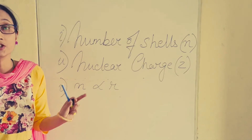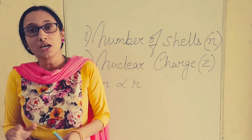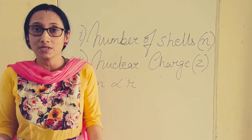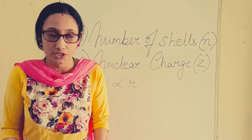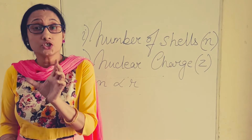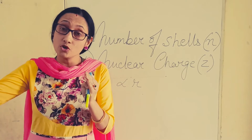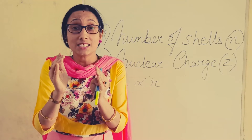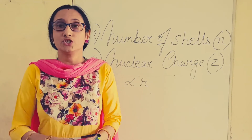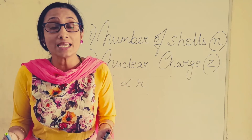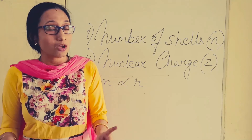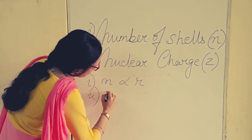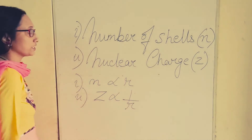The second factor is nuclear charge, designated as Z. Nuclear charge is the total positive charge present within the nucleus of an atom, represented by the number of protons. When nuclear charge increases, the attraction of the outermost shell towards the nucleus also increases, meaning the distance decreases. So an increase in nuclear charge will cause shrinking in radius — nuclear charge Z is inversely proportional to atomic radius R.